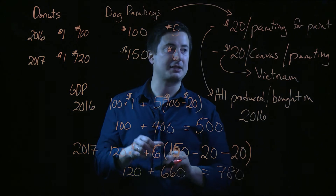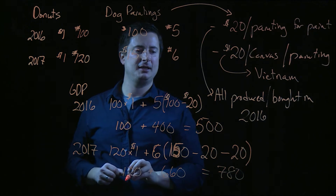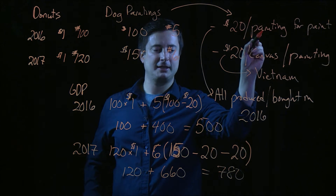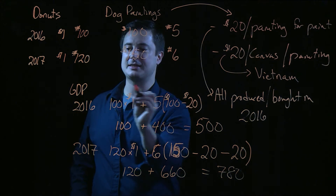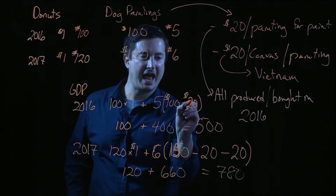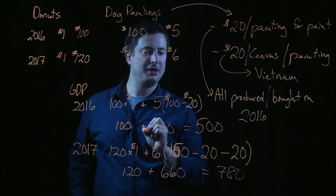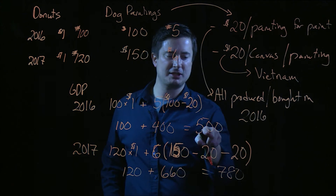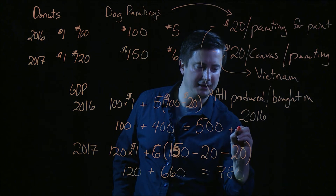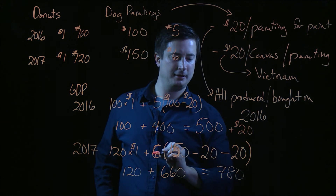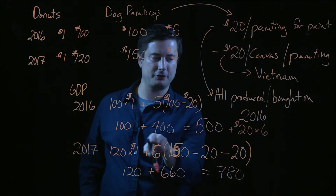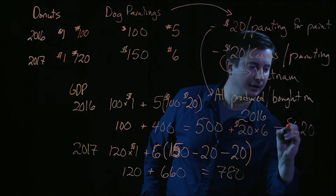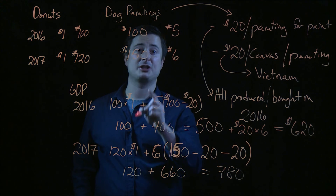Let me correct myself and go back to 2016 quickly. In 2016, remember, we actually produced the paint in 2016 — and in fact, it's enough paint not just for the five paintings in 2016, which is already included in the value added, but also the paint for the six paintings in 2017. So in addition to that five hundred, we have to add in twenty dollars worth of paint times the six paintings eventually produced in 2017. So our actual GDP in 2016 is six hundred and twenty, not the five hundred we initially calculated.